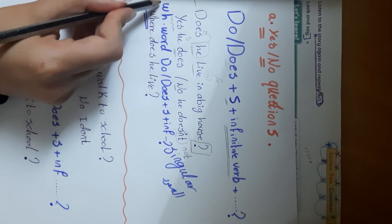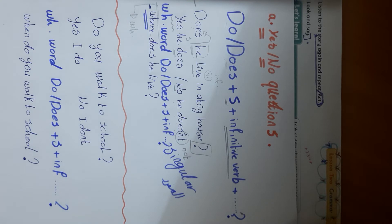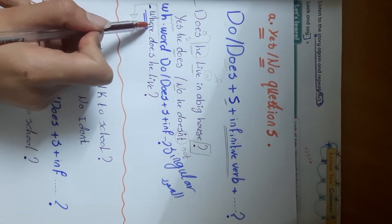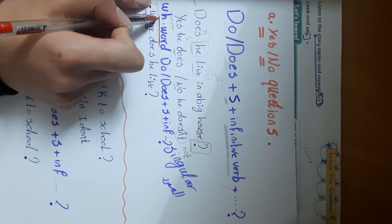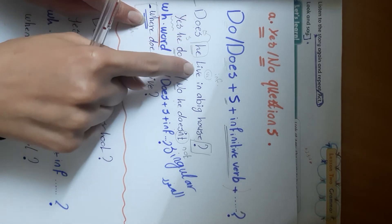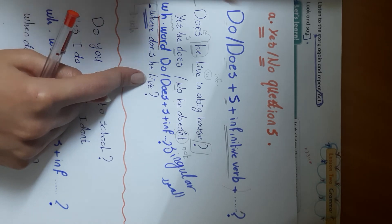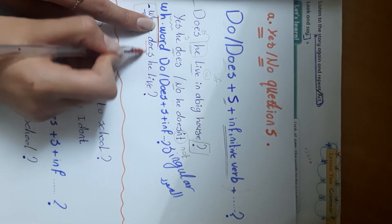WH word questions are called that because they start with WH words — like 'where,' 'what,' 'when,' 'who.' We ask the same way as with do/does, but we put the WH word at the beginning. For example: 'Where does he live?' — the only change from a yes/no question is adding the WH word before 'does.'